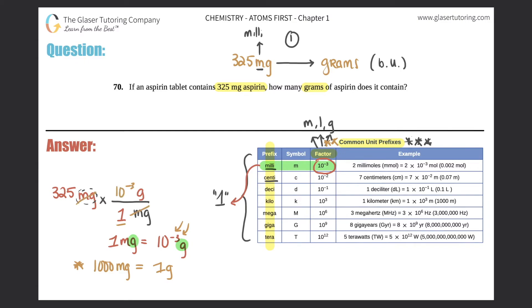Milligrams cancel out, and you're left with the unit that you're searching for, which is grams. So all we have to do is just multiply this out. Anything divided by one will be the same. So in this case, you just have to multiply 325 times 10 to the third, which would be 0.325 grams.